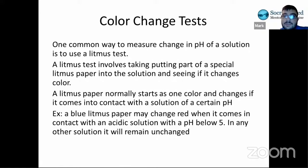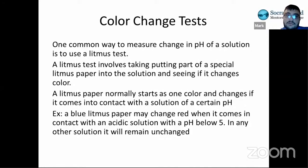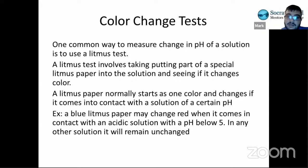The next lab techniques I want to talk about are color change tests. One way to measure the pH of a solution is through a pH meter, but that's a more recent technology and may not always be convenient — it can sometimes be difficult or somewhat inaccurate. Before this, we commonly used pH color change tests.